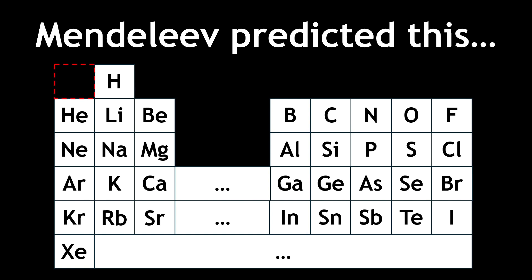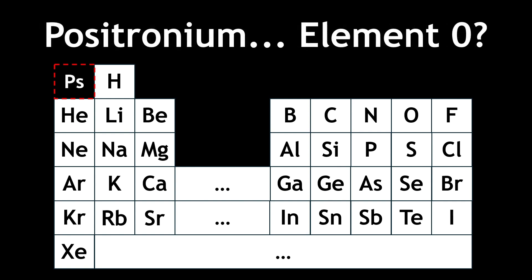Was this square meant to represent element zero? And if so, what did Mendeleev think would be placed there? Perhaps positronium is what fills that placeholder, with an atomic number of zero.